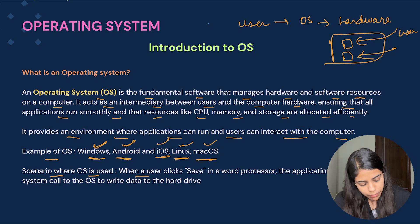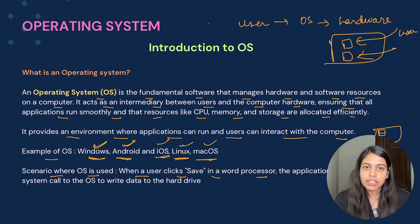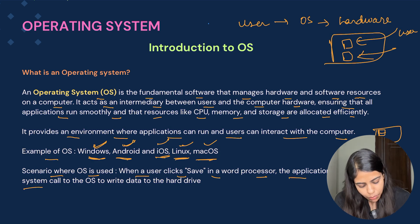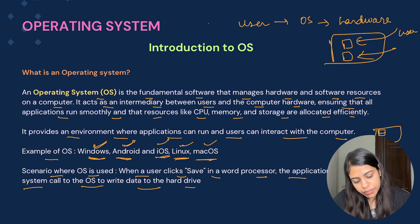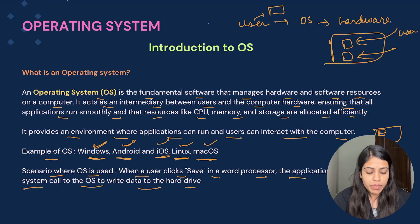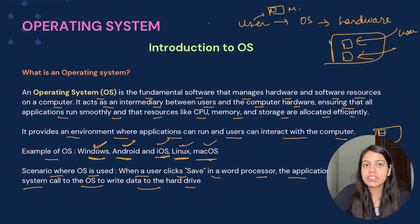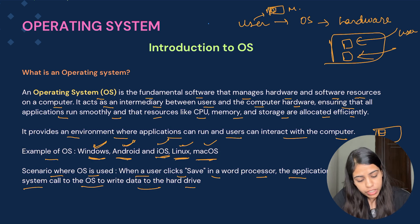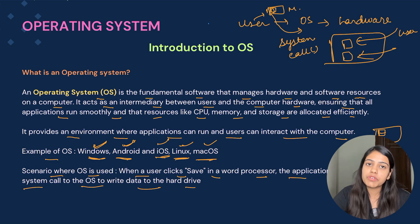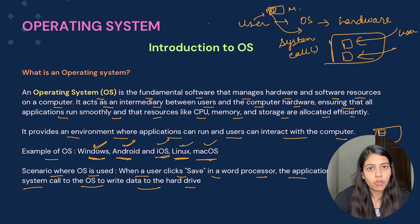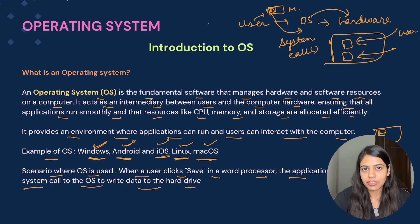Now a scenario where the operating system is used: whenever a user clicks the save button in a word processor, the application issues a system call to the operating system to write the data to the hard drive. The application program sends a system call to the operating system, telling it which file needs to be saved. The user interacts with the application, the application program gives a system call to the operating system, and then the operating system talks to the hardware to save that document to the disk.